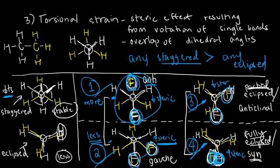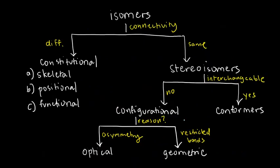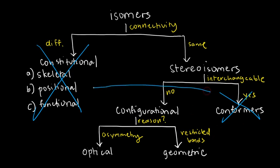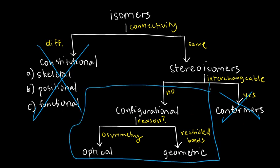We're done with constitutional isomers and conformers. Part two will be all about configurational isomers — there's a lot to consider in terms of naming them, so stay tuned. You'll most likely see it immediately after this Part 1 of isomers.